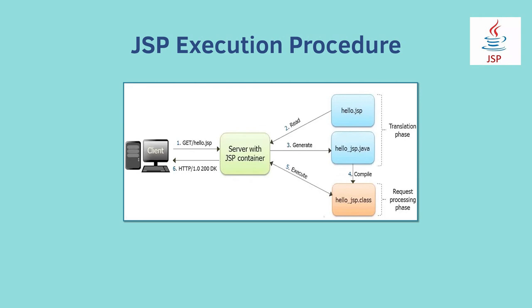Now let's look at the GSP execution procedure — how exactly GSP is compiled. What is a GSP file and how does it compile? A GSP file will be converted to a servlet file. The servlet file is compiled and generates a .class file. This .class file is loaded into memory and executed by JVM. When I write a GSP file, it gets compiled to a servlet file only.